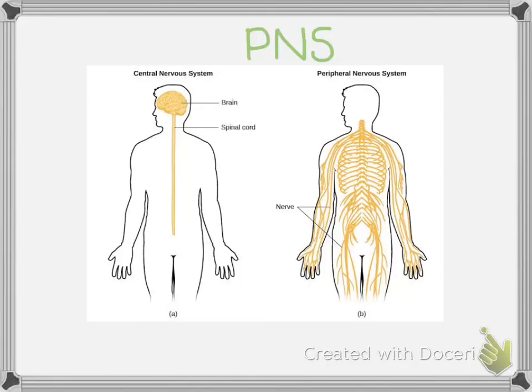Today, we are going to be looking at the peripheral nervous system. If you are following through on your textbook, we are on page 126. A very quick recap from our lesson two days ago: we were originally looking at the central nervous system, which consists of our brain and the spinal cord.